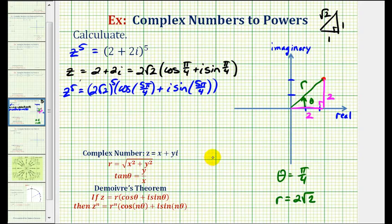Well, (2√2)^5, we'd have 2^5 times (√2)^5. This would be 2^5 times 2^2·√2. So this is 2^7·√2, or 128√2.